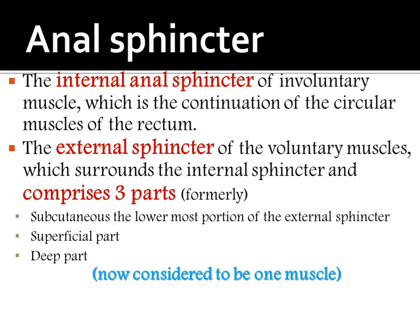Now, the anal sphincters. The anal sphincters are divided into two parts: internal anal sphincter and external anal sphincter. The internal anal sphincter is a group of involuntary muscles, which is the continuation of the circular muscles of the rectum. The external anal sphincter consists of voluntary muscles which surround the internal sphincter and has three parts: subcutaneous — the lowermost portion — superficial, and deep.